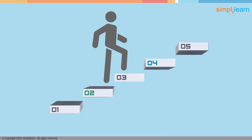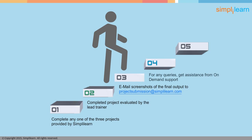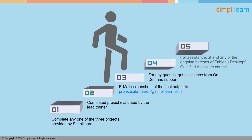For Tableau 9 Desktop Qualified Associate Certification, it is mandatory to fulfill the following criteria. Complete any one of the three projects provided by SimpliLearn within the online self-learning course access period. The completed project is then evaluated by the lead trainer. Screenshots of the final output and the source code used should be mailed to projectsubmission@simplylearn.com within the online self-learning course access period. For any queries or difficulties while solving projects, you can get assistance from on-demand support. If you have subscribed to the live virtual classroom training, you may attend any of the ongoing batches of Tableau Desktop 9 Qualified Associate course for assistance if you face any issues while implementing the project.